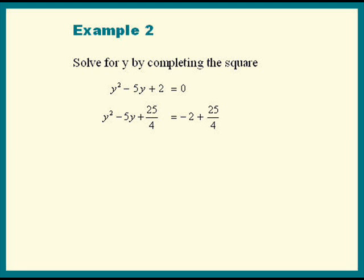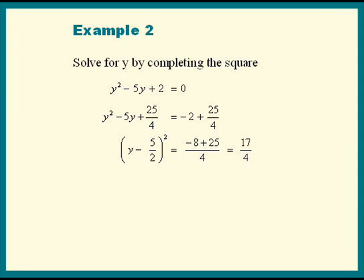Completing the square, we get y minus 5 over 2, squared, is equal to — on the right side, we get a common denominator of 4. Negative 2 times 4 is negative 8, plus 25. That gives us 17 over 4.